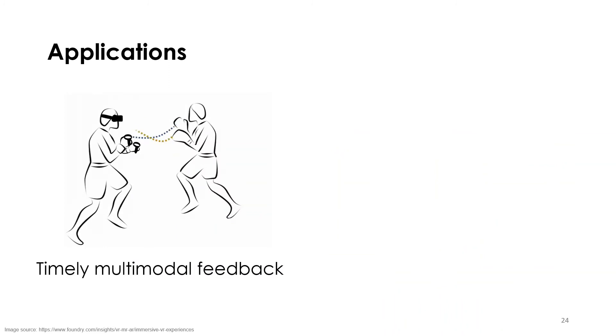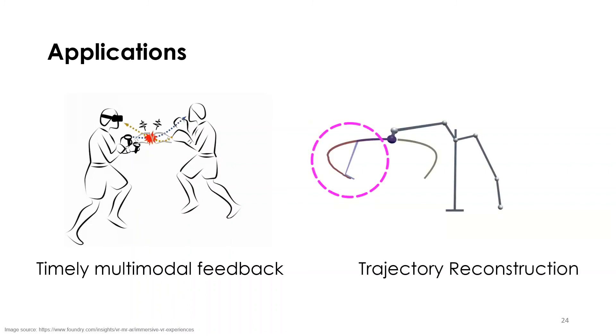Our model can be used to provide timely multimodal feedback. For example, by predicting future collisions, we can render haptics beforehand. We also show that our model can be used to reconstruct missing trajectory segments due to intermittent loss of trackers.